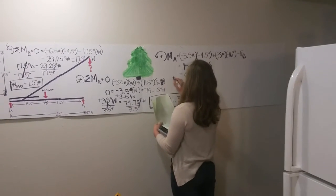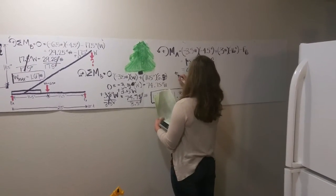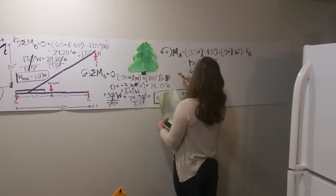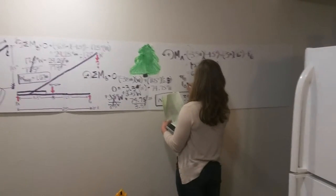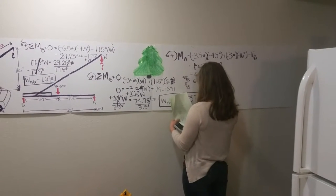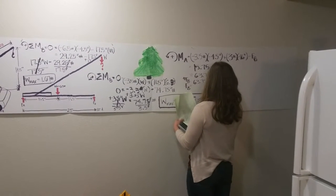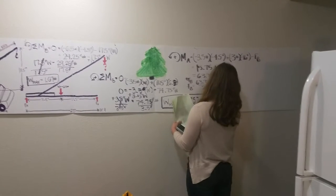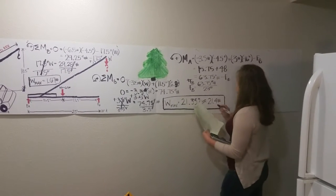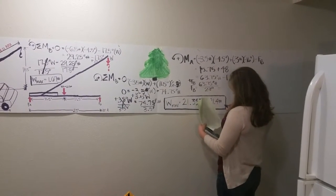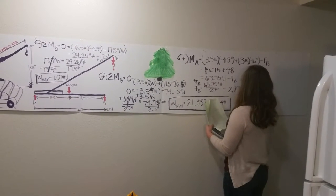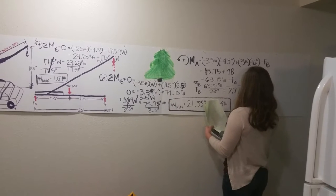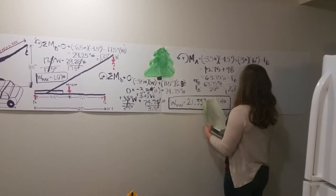Just subtract B from this side, or add B to this side. And then you could take the 63.75 inch-pounds and divide it by the full 23 inches that it is away from A. And you would come up with 2.77 pounds of force for FB.